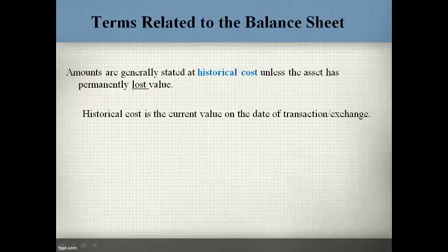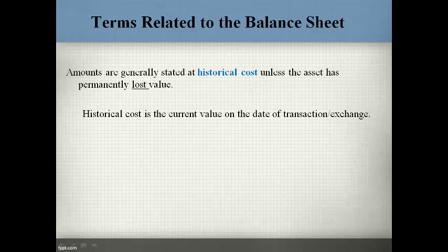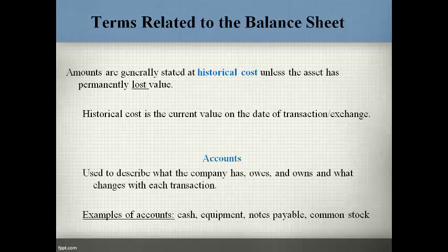The amounts on the balance sheet are reported at historical cost unless the asset has permanently lost value, in which case the amount is adjusted to a lower fair market value. Historical cost is the value when the transaction occurs. Accounts is a word used to describe what the company has, owes, or owns.